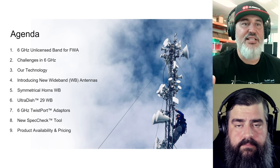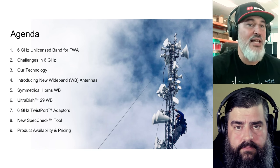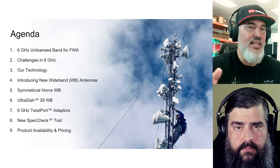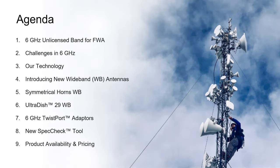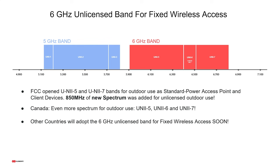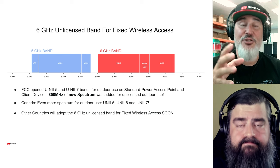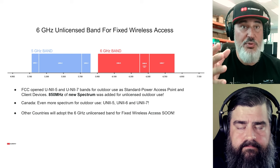Today's agenda for this webinar covers many different topics: the 6 gigahertz unlicensed band for fixed wireless access, the challenges people are seeing in 6 gigahertz, our technology, our new products, some new tools like our Spec Check tool, and finally product availability and pricing. The FCC recently opened up the UNI-5 and UNI-7 bands for 6 gigahertz operation in the U.S. for access points and client devices.